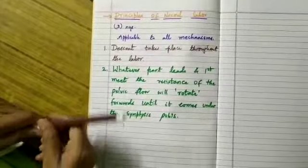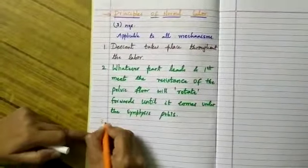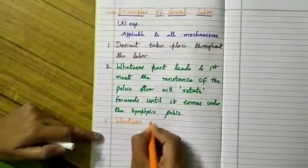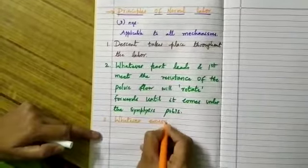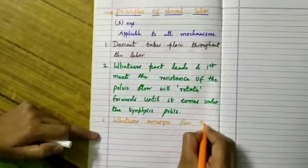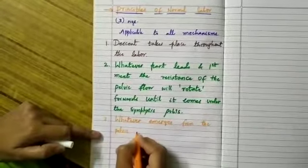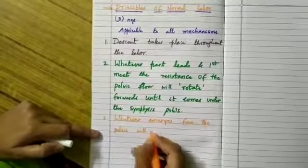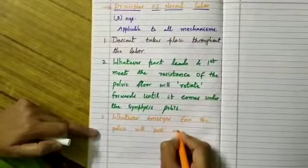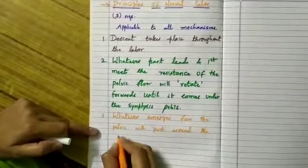Whatever part leads first and it will meet the resistance of the pelvic floor will rotate forwards until it comes under the symphysis pubis. Then comes the third principle which says whatever emerges from the pelvis will pivot around the pelvis.